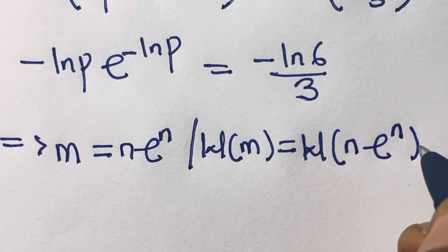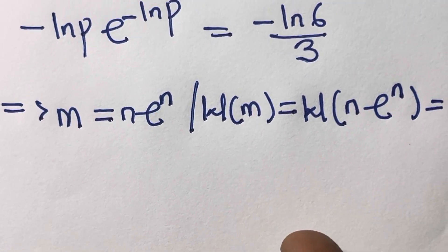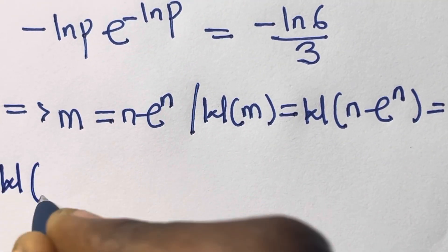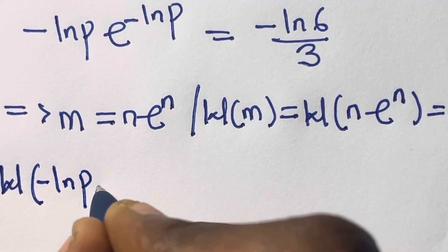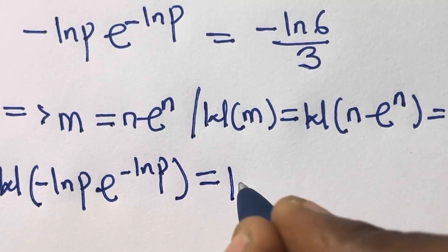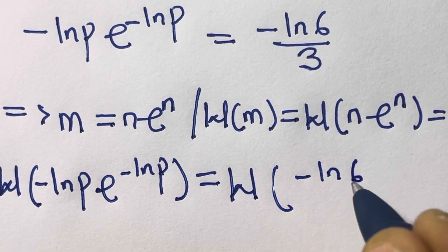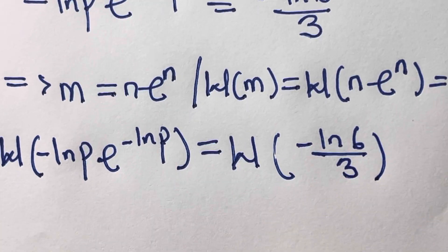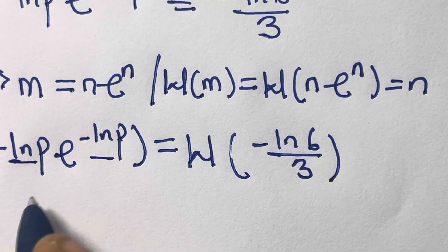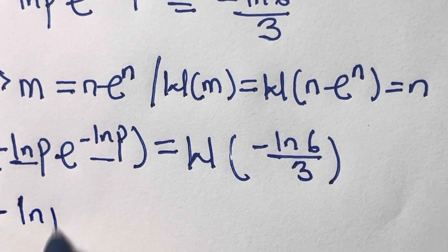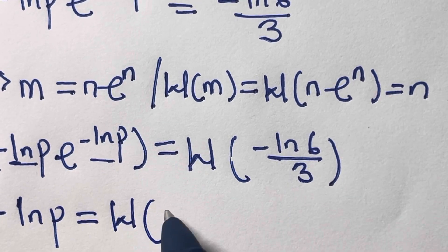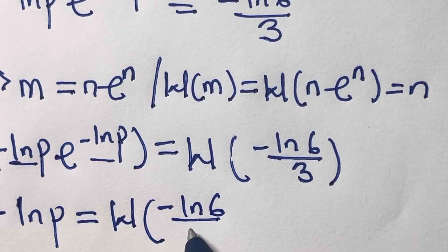The Lambert W function satisfies W(n·e^n) equals n. Applying this to minus ln(p) times e^(-ln(p)) equals minus ln(6)/3, we take the Lambert W of both sides. So W(minus ln(p) · e^(-ln(p))) equals minus ln(p), and this equals W(minus ln(6) divided by 3).